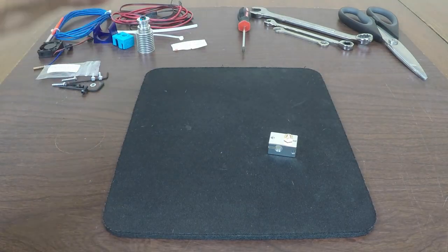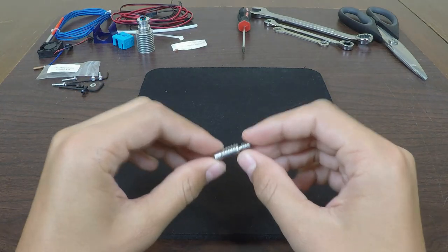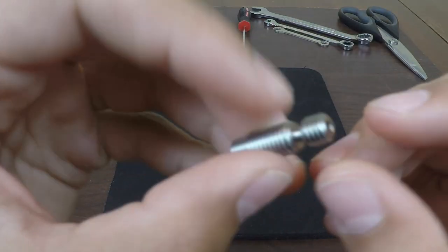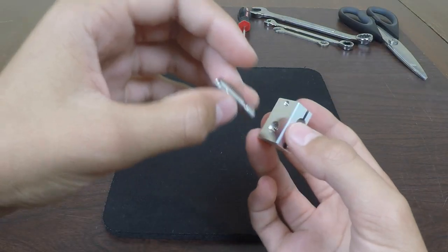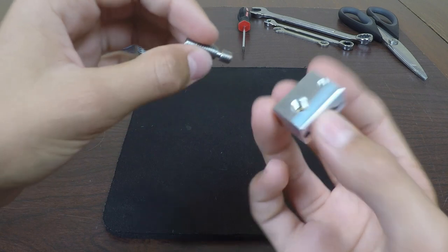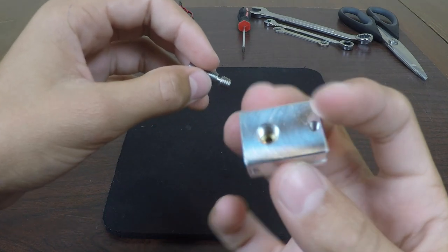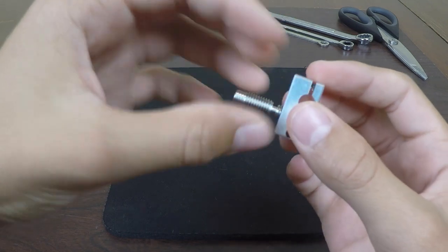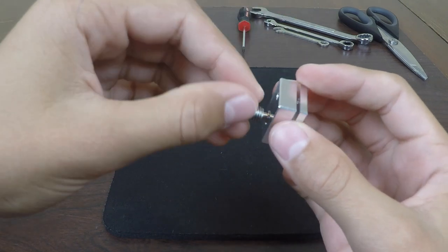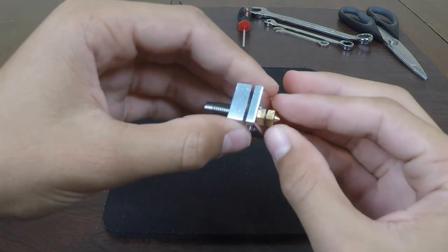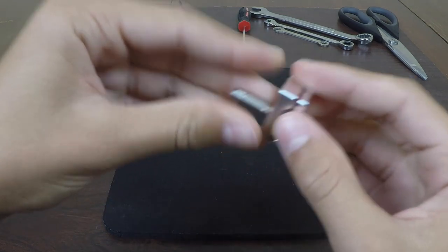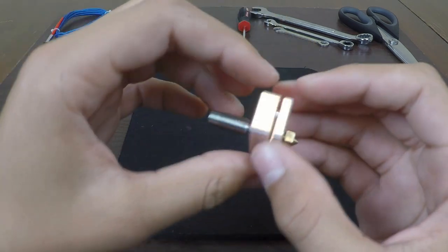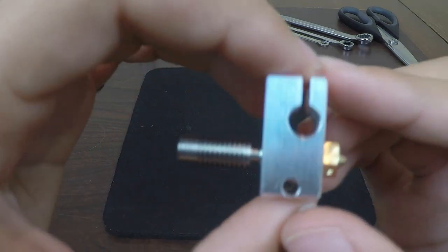The next step is to go ahead and grab your heat break. And then with your heat break, you're going to put in this separated side behind the nozzle, so on the other side of the heater block that has the one hole on the side. You're just going to hand tighten this in. It's very delicate, so just tighten it until it comes up right against the nozzle. Once you have it about perfect, it should look something like that.